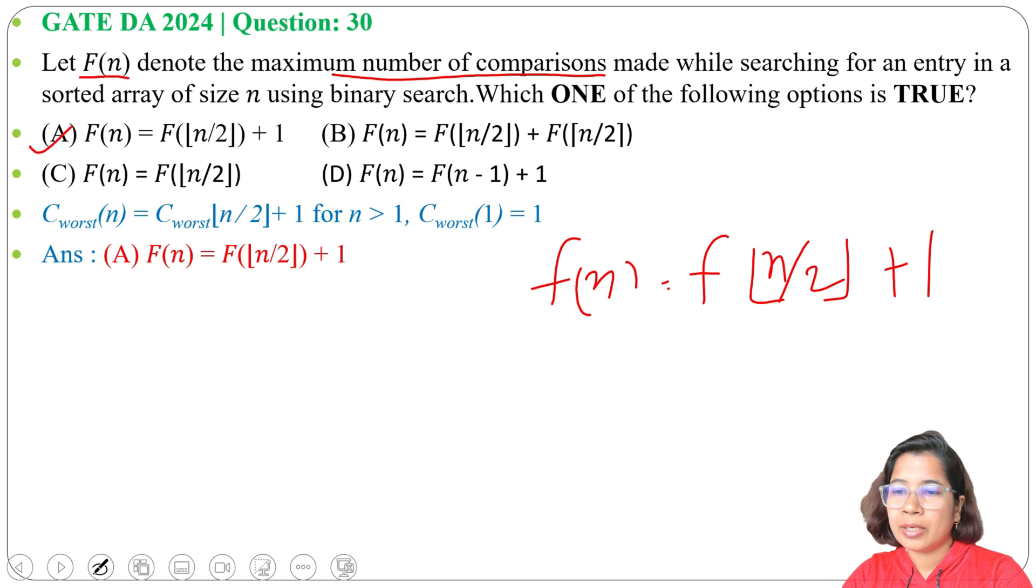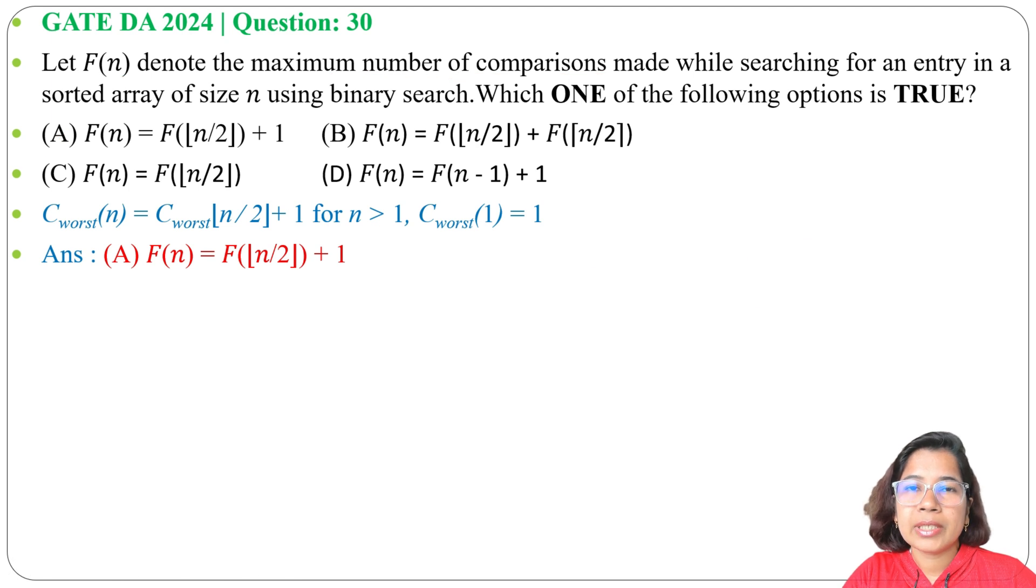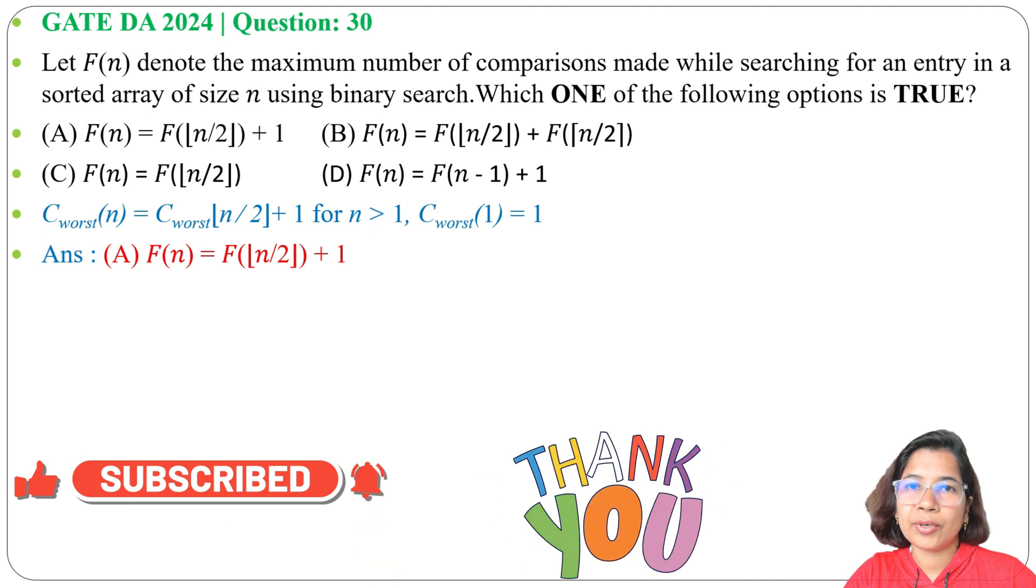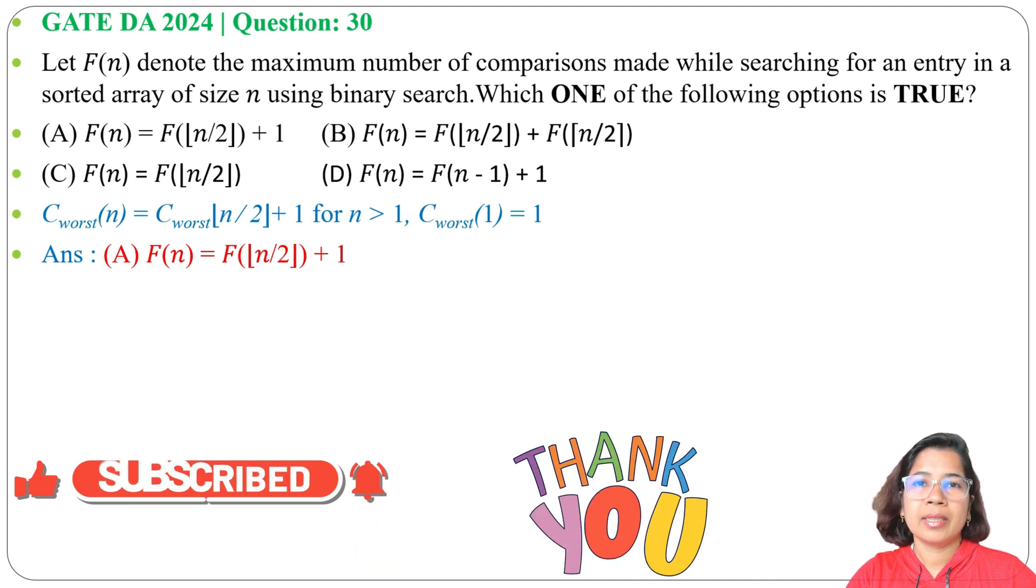Now check in which option it's present. It's present in option A. So F of n equals to F of n divided by 2 floor function plus 1. This is a direct question. I already discussed binary search, just go through the lecture. And if this lecture is helpful for you, please like, share and subscribe. Thank you.